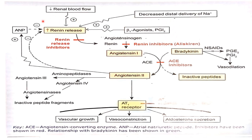Renin acts on angiotensinogen. Angiotensinogen is the alpha globulin which is synthesized and released from the liver. Circulating angiotensinogen is converted into angiotensin 1 in the presence of renin.